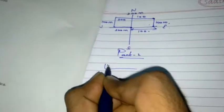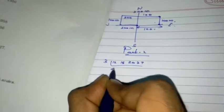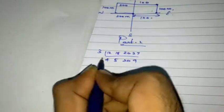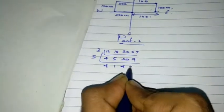So, go to LCM. 12, 15, 20, 27. So, 3 table. 4, 5, 20, 9. 5 table. 4, 1, 4. 4, 1, 4, 9. Again, 2 table.